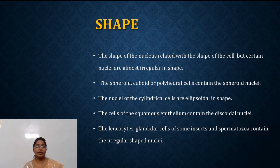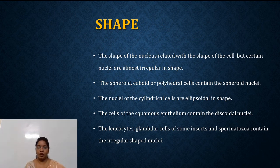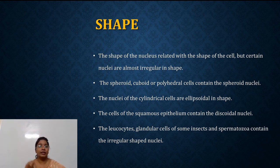The shape of nucleus is related with the shape of the cell, but certain nuclei are irregular in shape. Spheroid, cuboid, or polyhedral cells contain spheroid nuclei. Cylindrical cells contain ellipsoidal nuclei. In cells of squamous epithelium, they contain discoidal nuclei. Leukocytes, glandular cells of insects, and spermatozoa contain irregular-shaped nuclei.